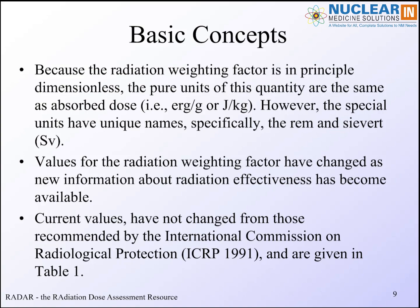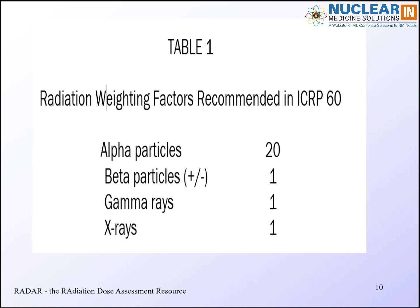The ICRP has changed these values a little bit over the years, not very much. Current values are shown in a table in ICRP Publication 60. Alpha particles, as mentioned, have a radiation weighting factor of 20. Almost all other kinds of radiation we're going to deal with have a radiation weighting factor of 1, so a rad equals a rem and a gray equals a sievert. For neutrons it's a very complex function of energy, though neutrons are largely unimportant in this context.